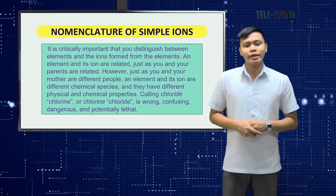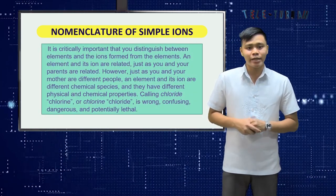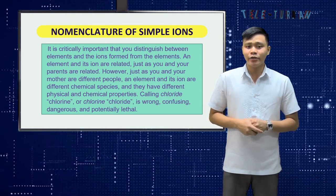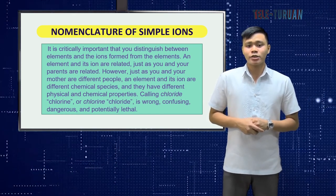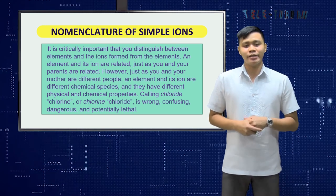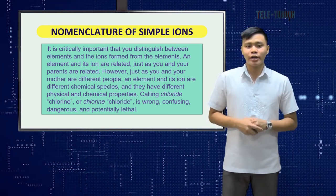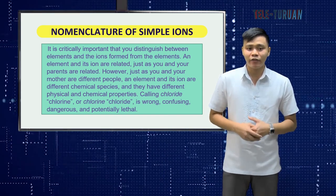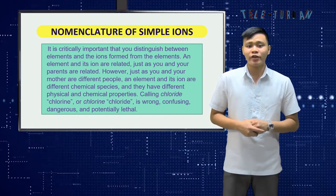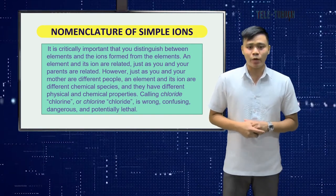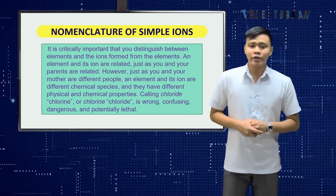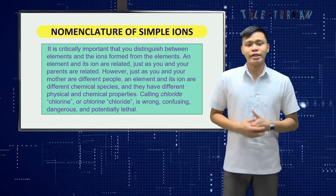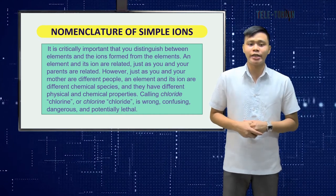It is critically important that you distinguish between elements and the ions formed from the elements. An element and its ion are related, just as you and your parents are related. However, just as you and your mother are different people, an element and its ion are different chemical species with different physical and chemical properties. Calling chloride 'chlorine' or chlorine 'chloride' is wrong, confusing, dangerous, and potentially lethal.